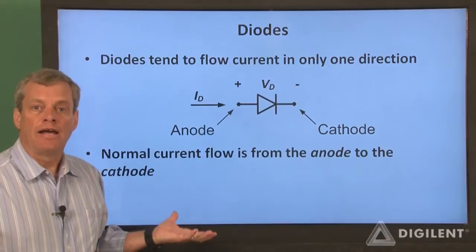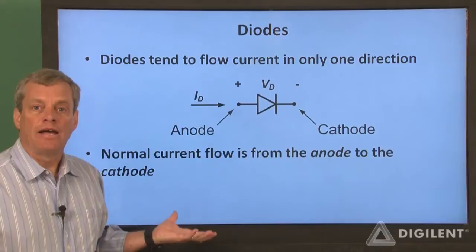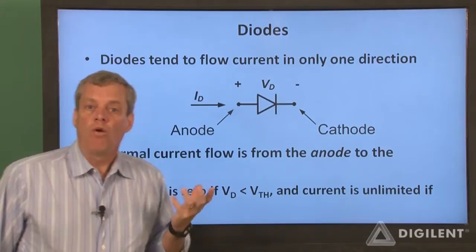In an electrical circuit, we always need a voltage difference to cause current to flow. For our diode, we'll call the diode voltage V sub D and the current I sub D.